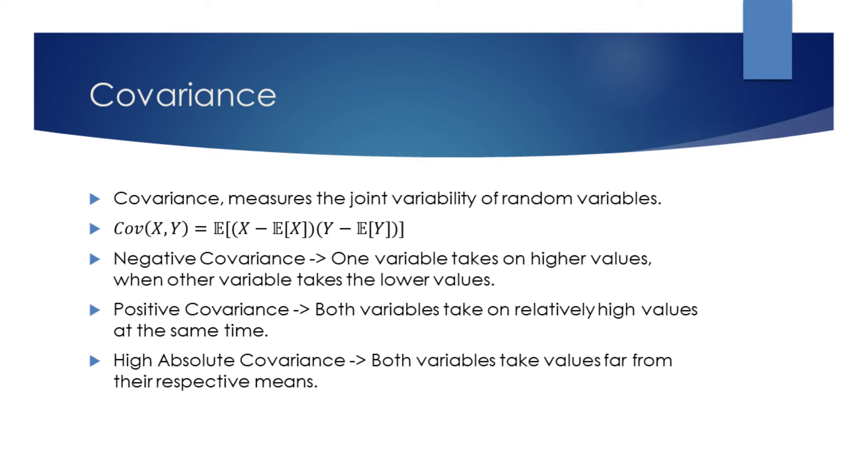For positive covariance, we can assert that both variables take on higher values at the same time. If the absolute covariance is high, we can assert that variables often result in values far from their respective means.